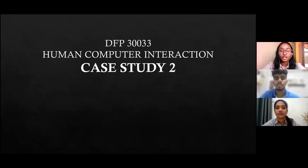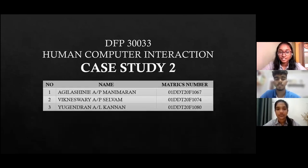Good morning to everyone. Today we are going to explain about case study 2 from Human-Computer Interaction subject. My name is Agirashini, daughter of Manimaran. My metric card number is 01DDT20F1067. My name is Ignatius Alvam and my metric number is 01DDT20F1074. My name is Yugen Ran. My metric number is 01DDT20F1080.